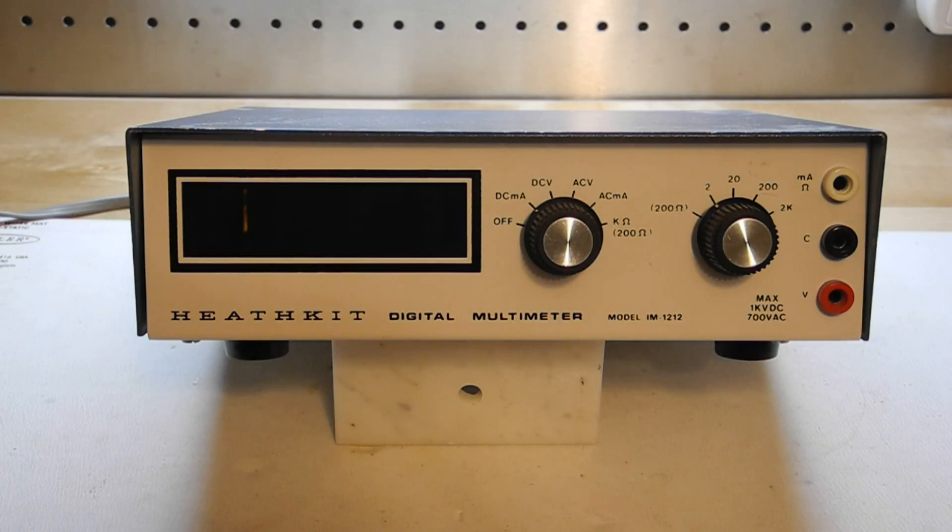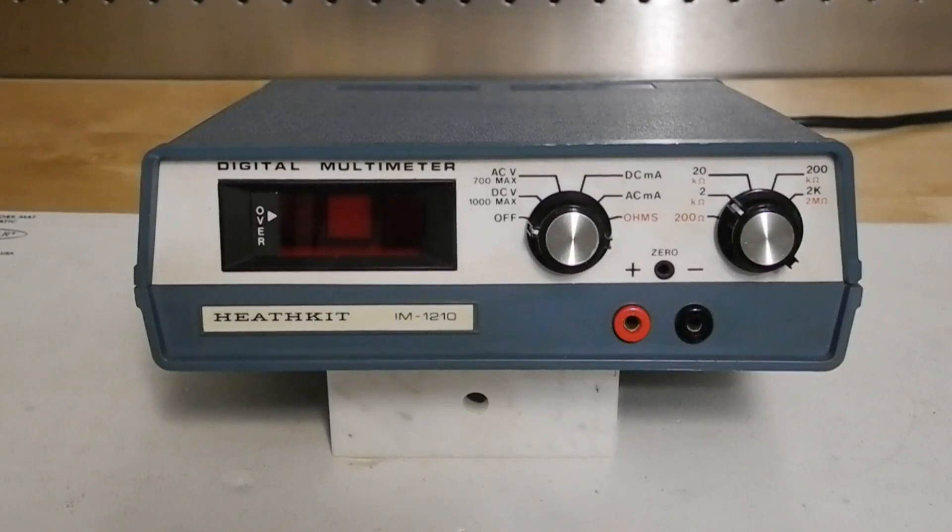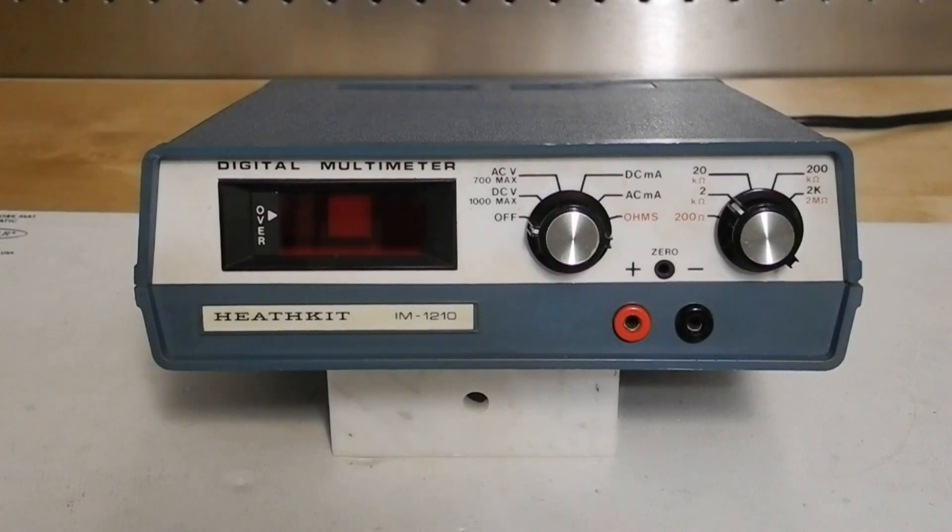The IM1212 was an updated version of the IM1202 in a different case style, but still featuring a Nixie tube display. In 1976, it was replaced by the IM1210, the subject of this video. Fundamentally, it's the same as the IM1212 and the earlier IM1202, with the main change being a switch from neon Nixie tubes to seven segment LEDs. This, in addition to changing the case from metal to plastic, reduced the parts count and the overall cost.